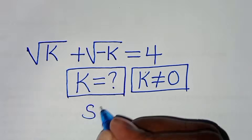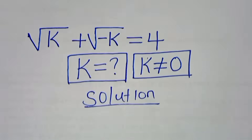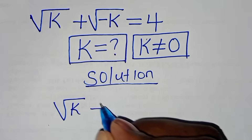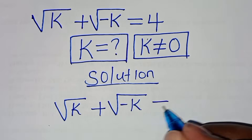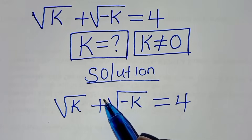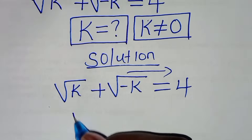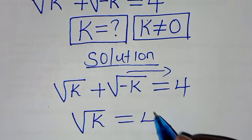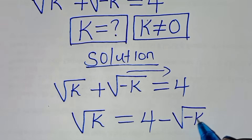So let's present a solution from here. We have square root of k plus square root of minus k, this is equal to 4. The first step is to take square root of minus k on the right hand side, so that now here we have square root of k, this is equal to 4 minus square root of minus k.